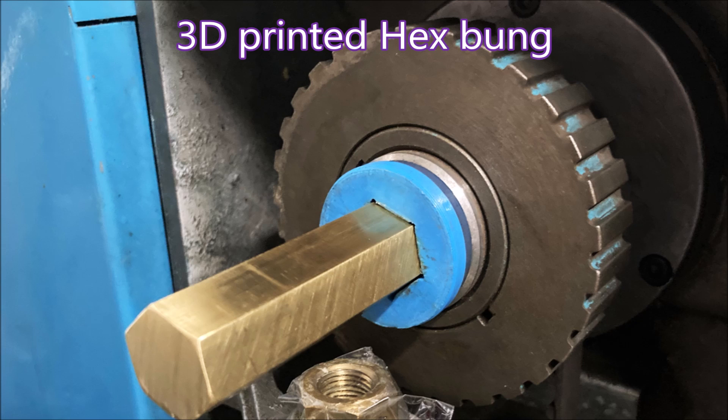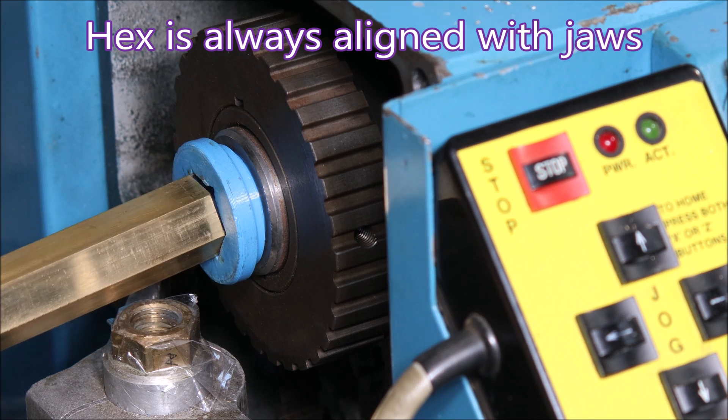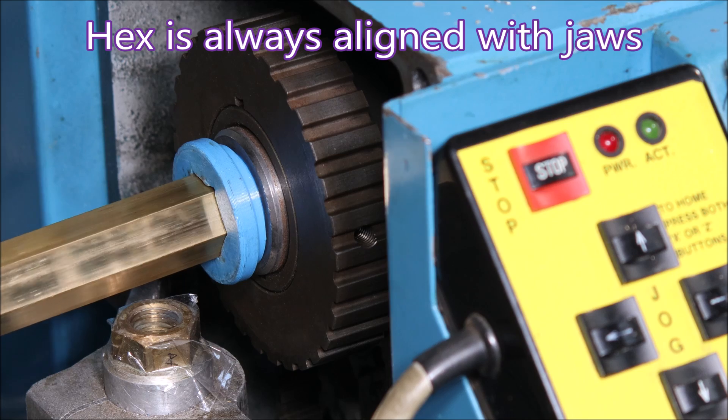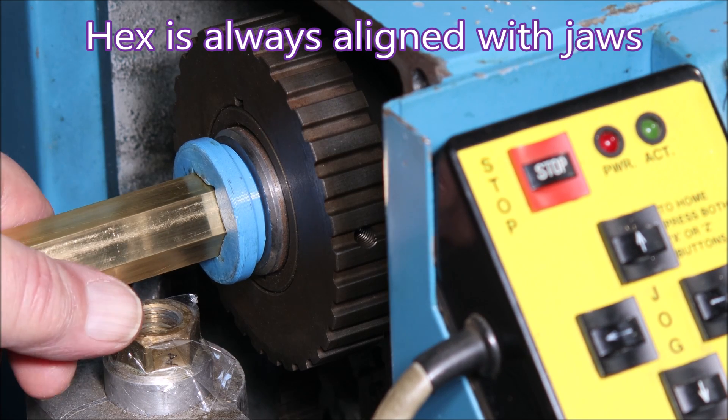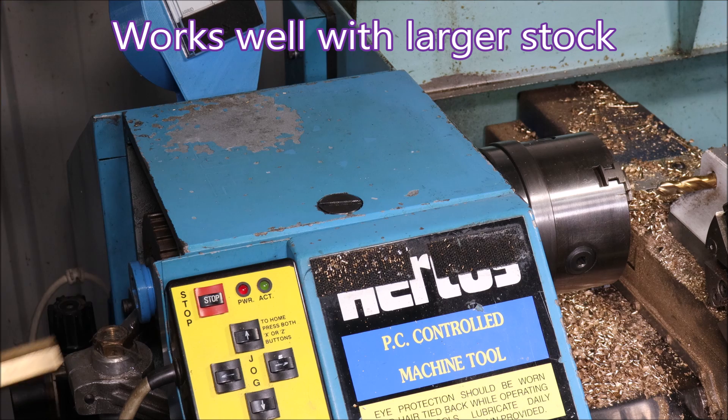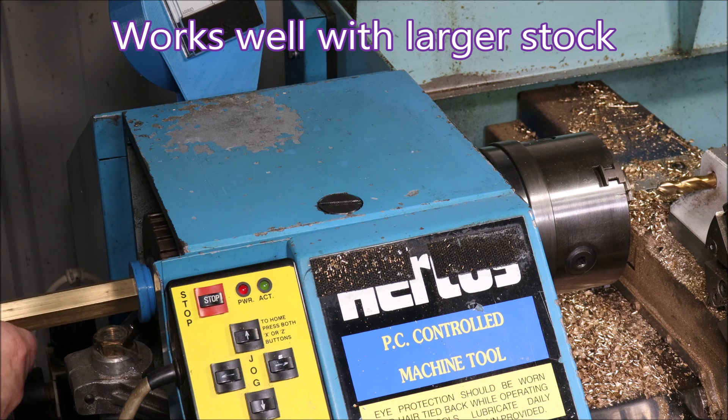When I created this bung to stop the stock from vibrating at 3000 RPM, I didn't realize when I made it hexagon, and I made it hexagon because I could with the 3D printer, it's really great at allowing you to line up the hex with the three-jaw chuck. It's just great.